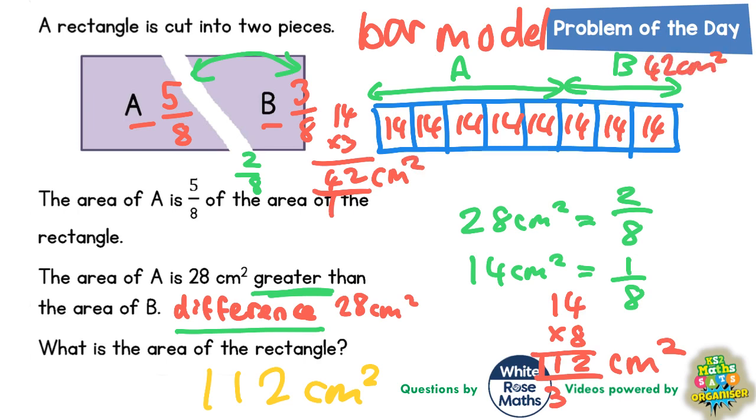And A would be five lots of 14. So 14 times five. Five times four is 20, put the zero in, carry the two. Five ones are five, plus the two is seven. So A is 70 centimeters squared.